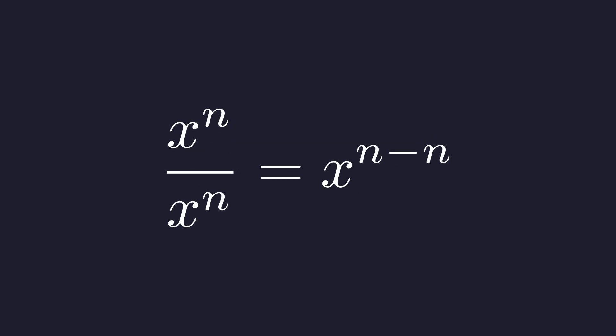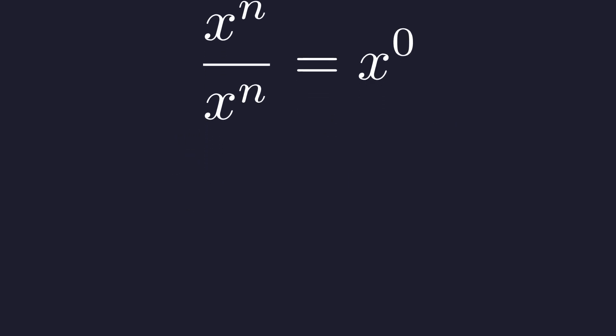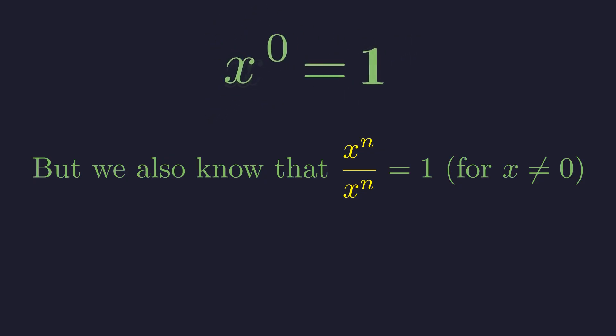This simplifies to x to the power of zero. At the same time, any non-zero number divided by itself is simply one. Since the left-hand side is the same in both expressions, the right-hand sides must be equal.